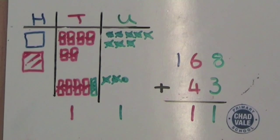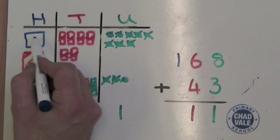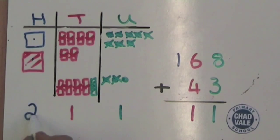We then count how many hundreds we've got, 1 and now 2 hundreds and we write them in the hundreds column.